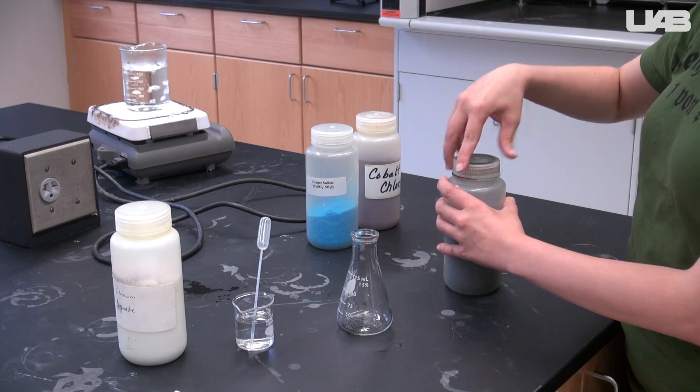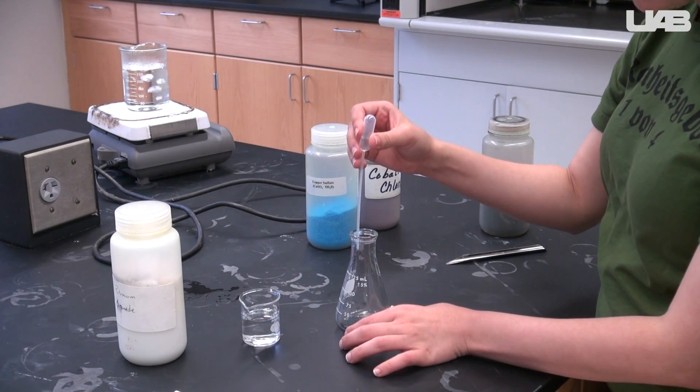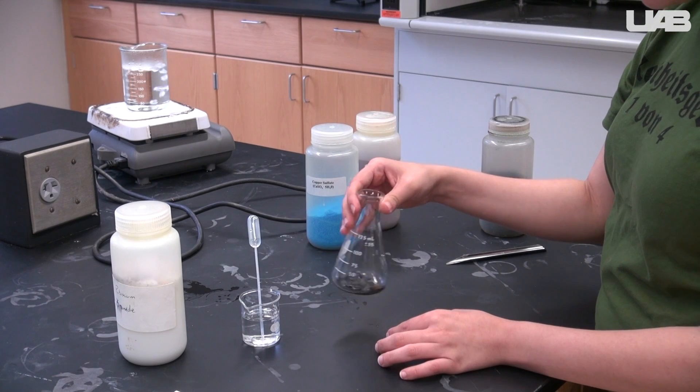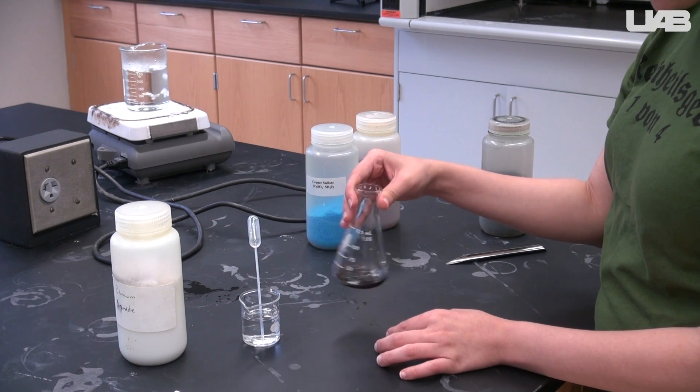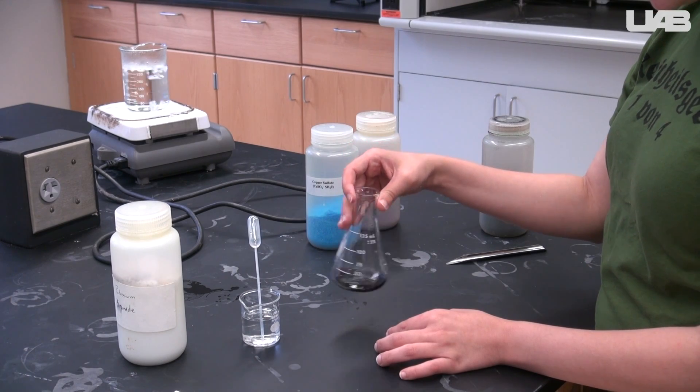First, weigh out about 0.5 grams of copper bromide into an Erlenmeyer flask. Then add 1 milliliter of distilled water. Record your observations in your notebook and compare to your observations from exercise 1 to identify the predominant compound.